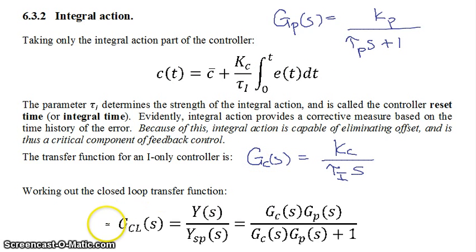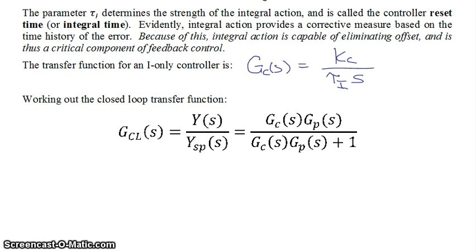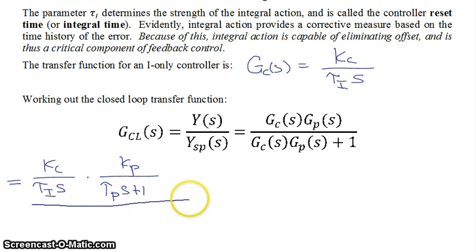Now remember your closed-loop transfer function looks like this, and we ask ourselves then, how does that work out when we put in the definition of gc and of gp in this particular case? So this would be equal to kc over tau i s, that's our gc, times gp, which would be kp over tau s plus 1, all of that divided by the exact same thing, all of that plus 1.